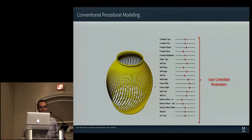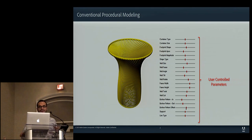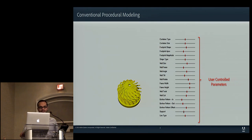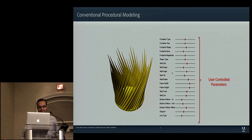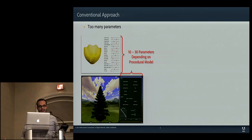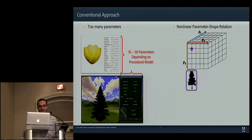Before going into what we're trying to do, let's first start with looking at what conventional procedural modeling looks like. In general, there will be a number of parameters in the order of tens, and the end user will be manipulating these parameters in order to get to a design they're searching for. One of the biggest problems with these systems, besides the obvious too-many-parameters problem, is that the high dimensional space these parameters create is highly non-linear with respect to visual expectations.